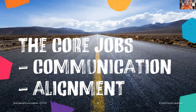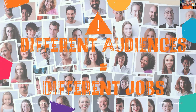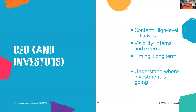It's more complicated than that, though. We have to consider the job of the roadmap — and at its core, that job is communication and alignment. Different audiences have different jobs for the roadmap. Let me share a few examples — and these are not prescriptive. Your CEO and investors care about high-level information, internal and external, and the long-term view. What they really care about is where the investment is going. This was brought home to me with a CPTO I'm coaching at the moment, whose CEO came to him and said: 'We need a roadmap — I need to know where we're going.'